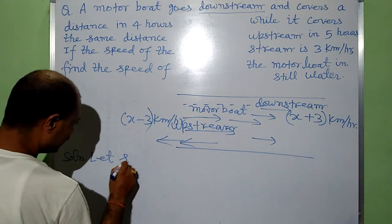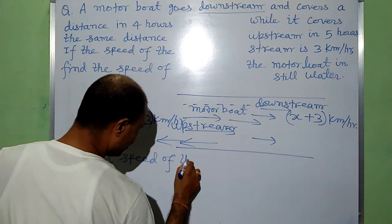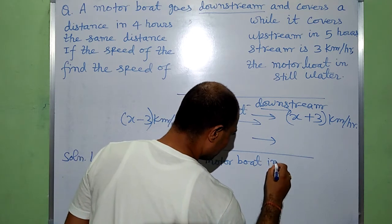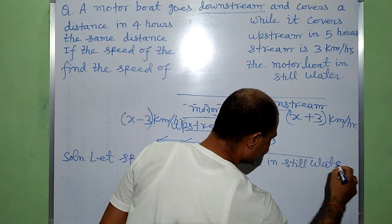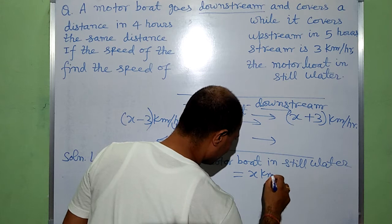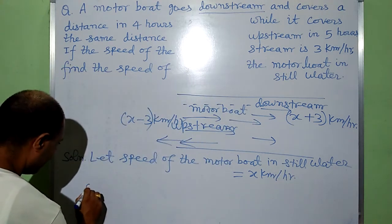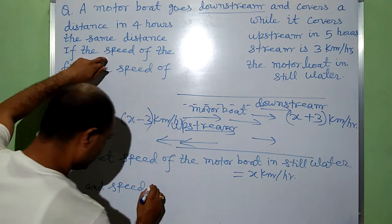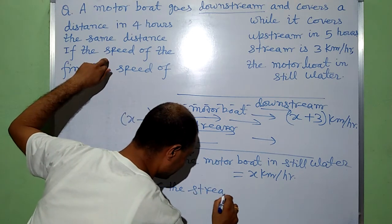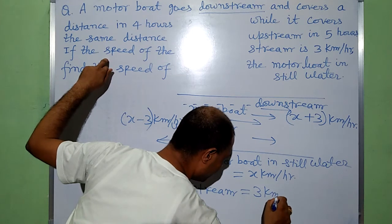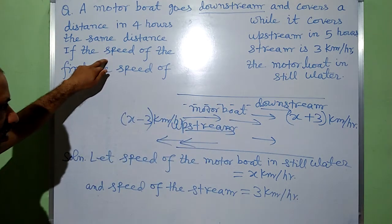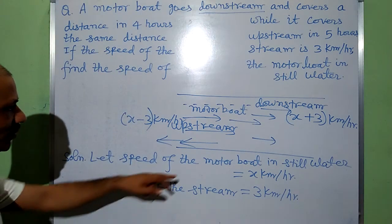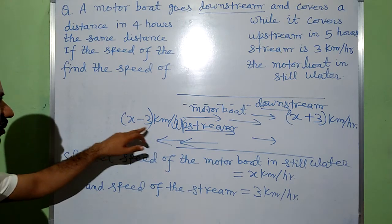Let the speed of the motorboat in still water be equal to X kilometer per hour. And the speed of the stream — it is given — that is 3 kilometer per hour. Then the speed of the motorboat in downstream will be X plus 3 kilometer per hour, as well as the speed of the motorboat in upstream will be X minus 3 kilometer per hour.